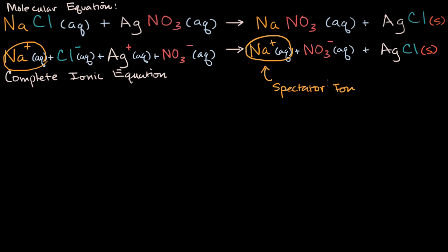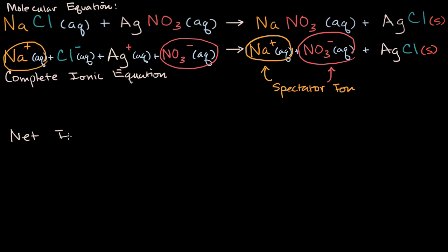If you want to think of it in human terms, the spectator ion is kind of out there watching the reaction happen. The sodium chloride is providing the chloride that eventually forms the silver chloride, but the sodium is just kind of watching. Similarly, the nitrate is dissolved on the left and dissolved on the right, so the nitrate is also a spectator ion. To go from a complete ionic equation to a net ionic equation — which deals with the things that aren't spectators — you just get rid of the spectator ions.